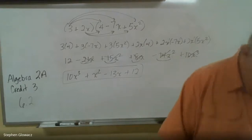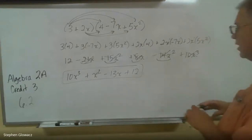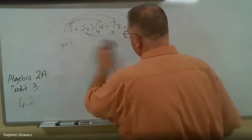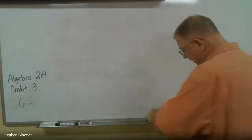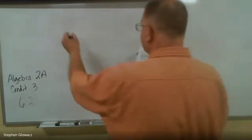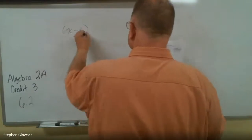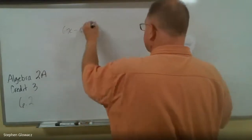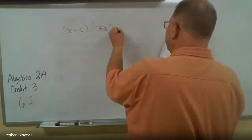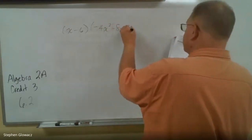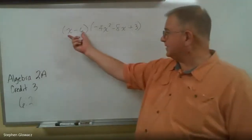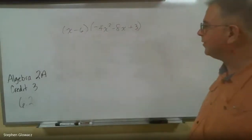So let's find number two on the same page. We've got (x - 6) times (-4x² - 8x + 3). Same thing here — we have to multiply both the x and the negative 6 to everything in the second parentheses.